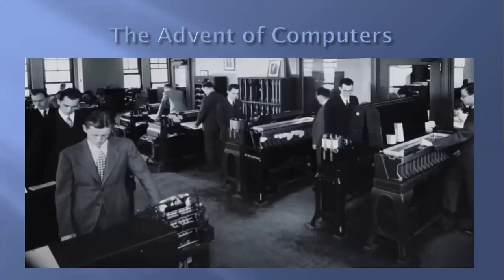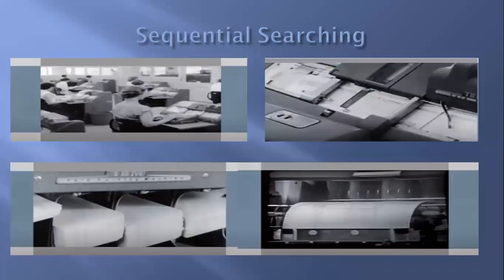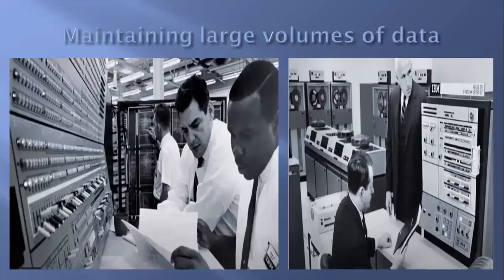Now, with the advent of computers, manual file systems were replaced by traditional file processing systems. This system was able to overcome the disadvantages. The flat file system consisted of a simple consecutive list of records and this computer-readable data was stored on magnetic tape or hard disk. The mechanism used to search records was sequential search which was steady and slow and it was very difficult to maintain large volumes of records. Overall, traditional file processing system was good in many cases in comparison with the manual non-computer-based system, but still it had many disadvantages that were overcome by database systems.